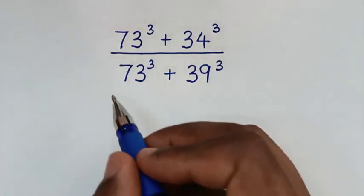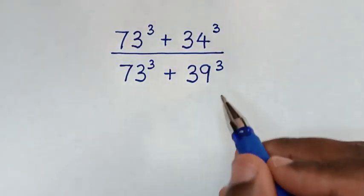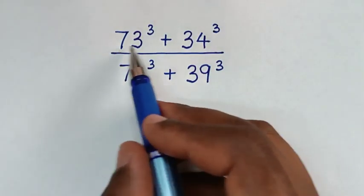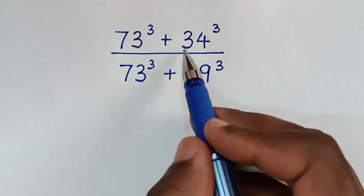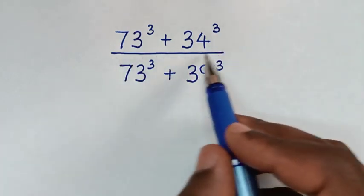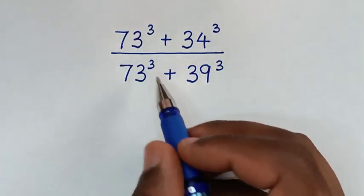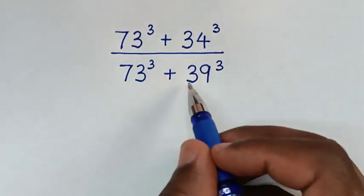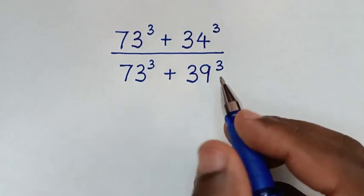Hello. You are welcome to solve this math problem, which is 73 power 3 plus 34 power 3 over 73 power 3 plus 39 power 3.